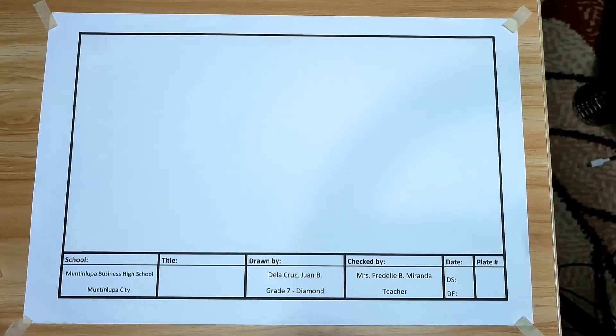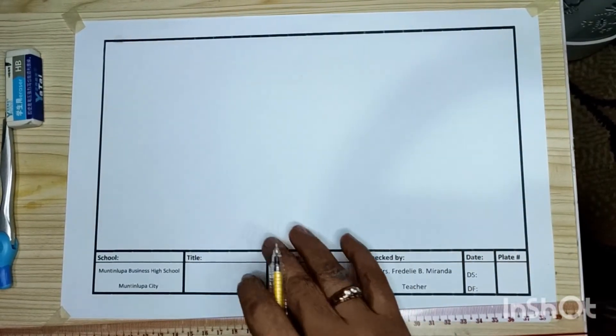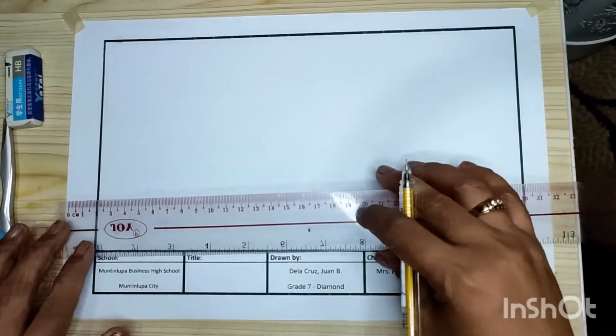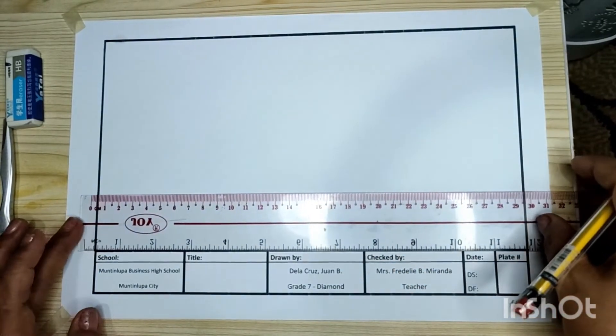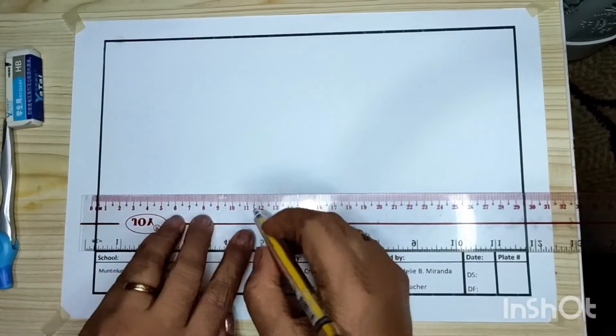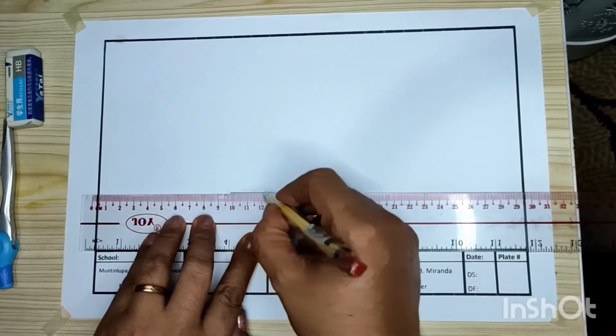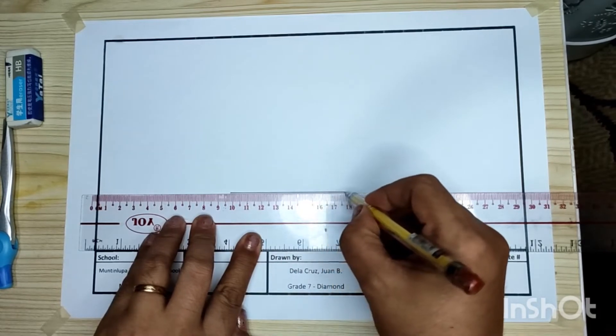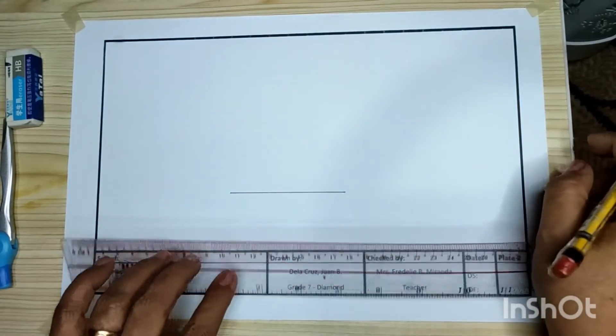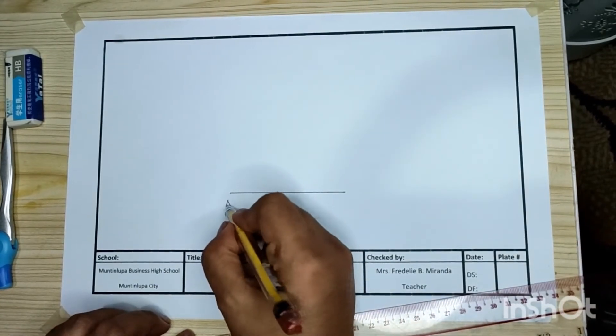Let's begin. Approximately on the center of our drawing paper, let us draw a straight line. Name this line A B.